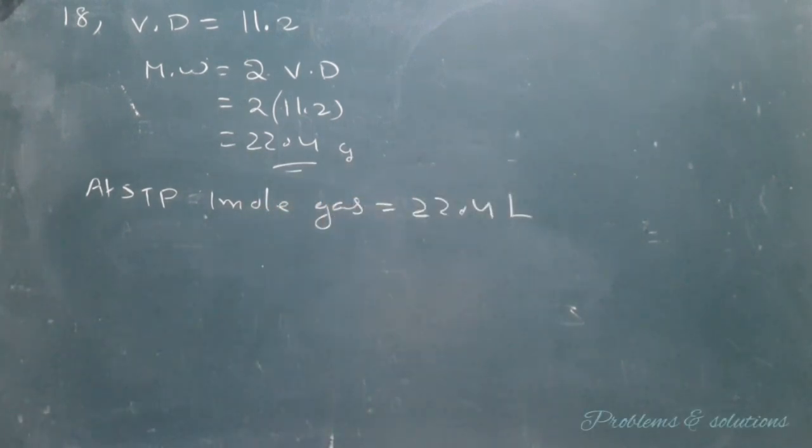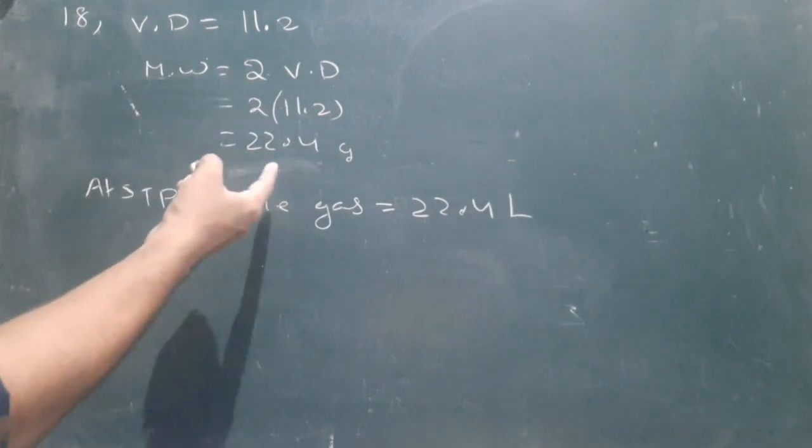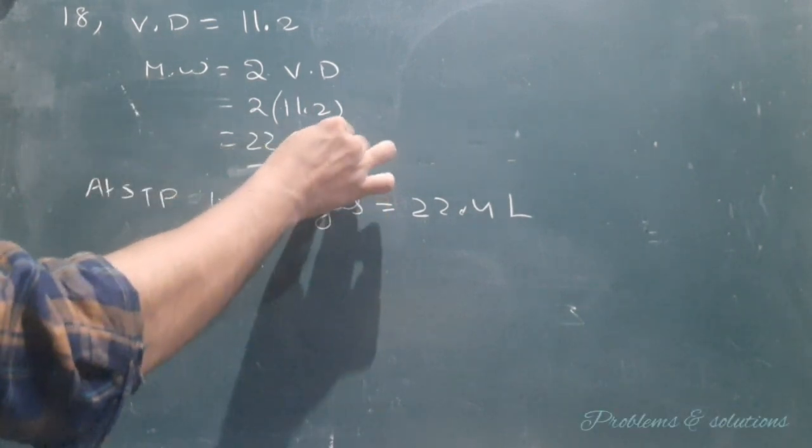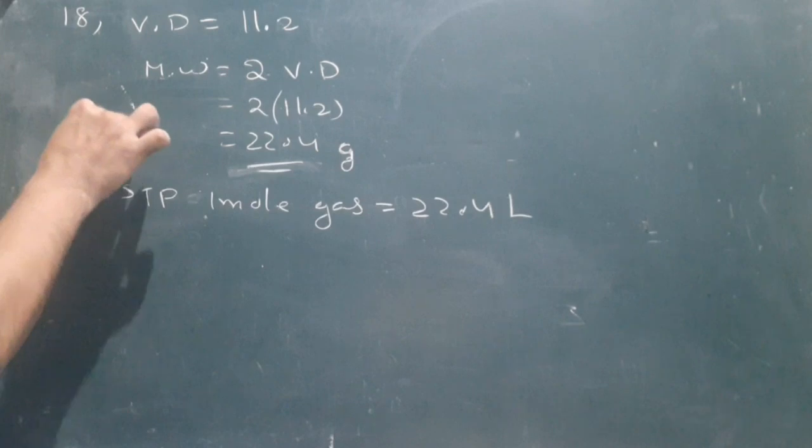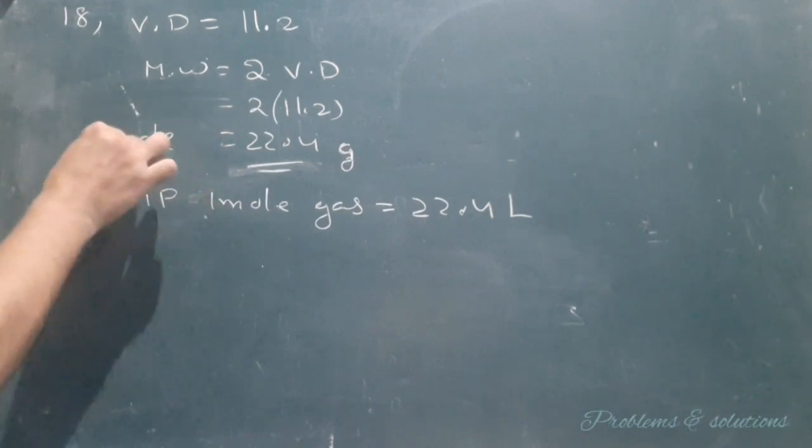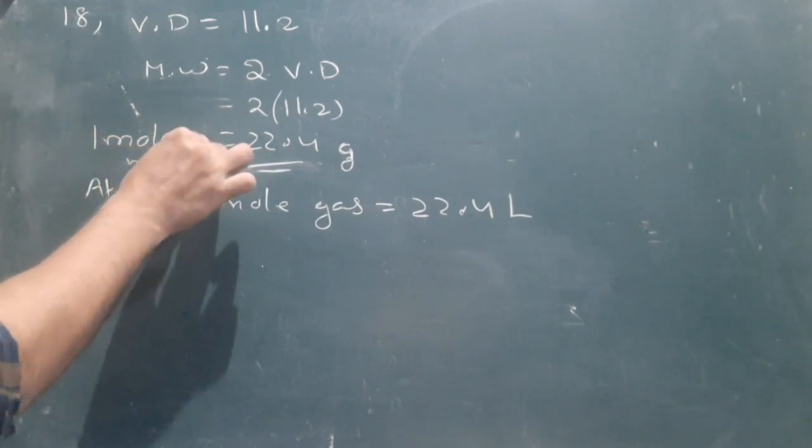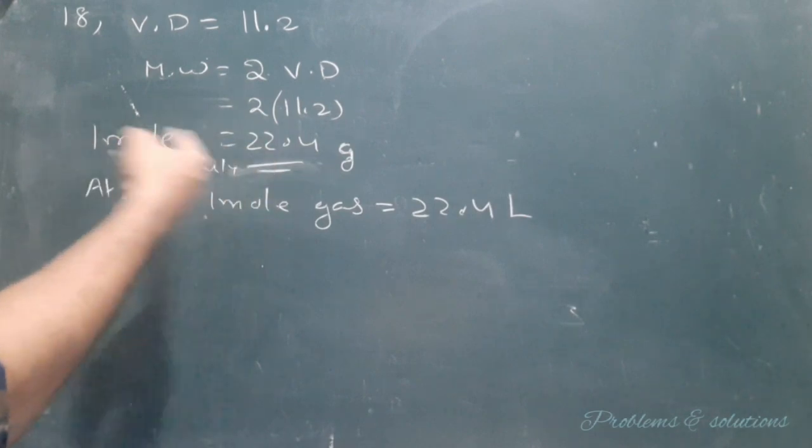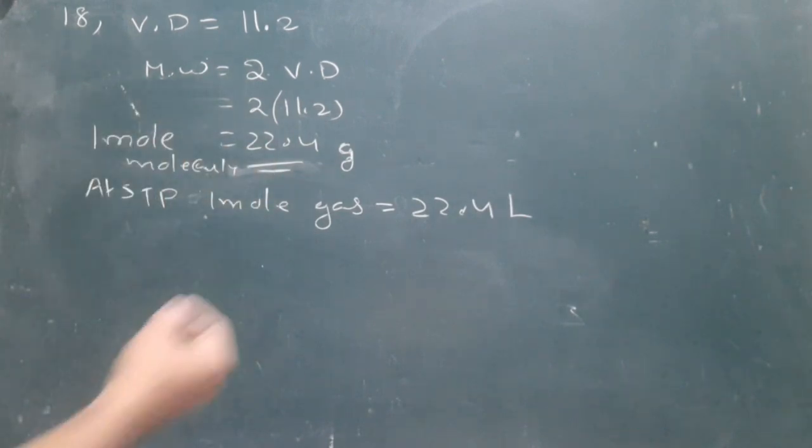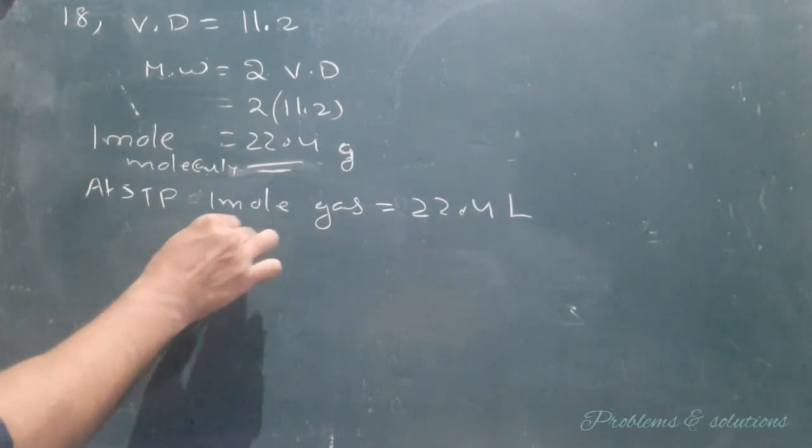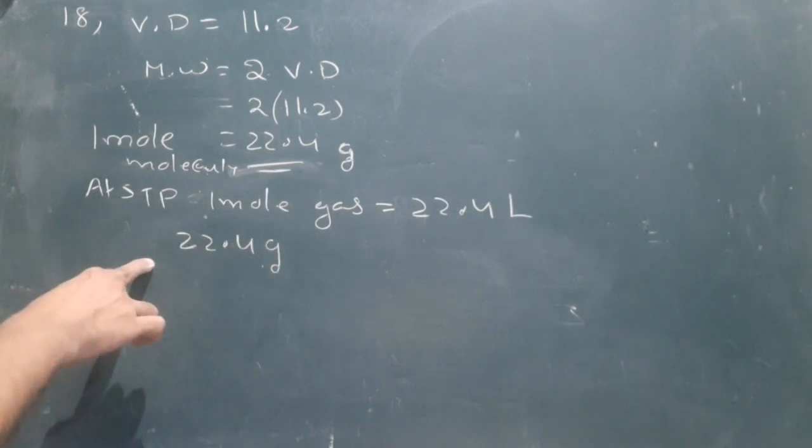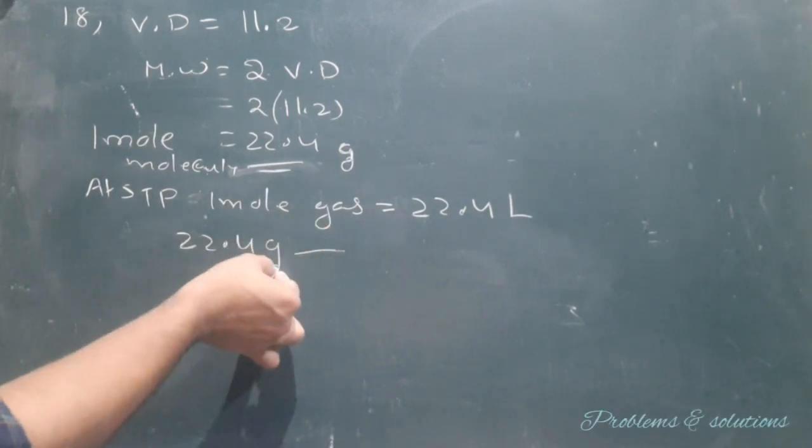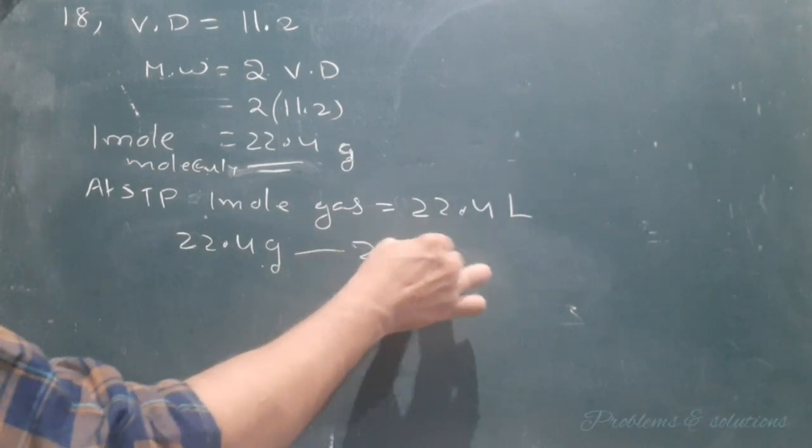Here, what is the molecular weight of the gas? 22.4 grams. Molecular weight is nothing but one mole of molecules. The weight of one mole of molecules is the gram molecular mass. So 22.4 grams is one mole, and it occupies 22.4 liters.